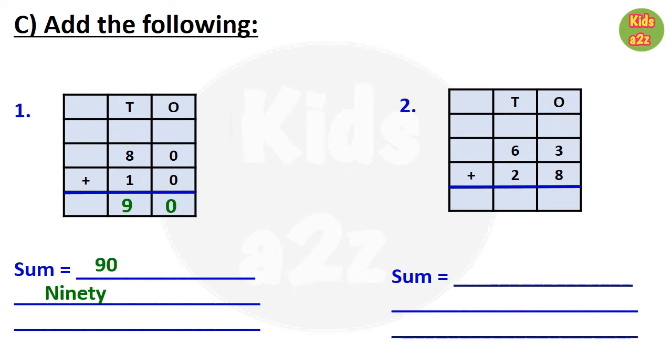For question number 2, first we need to add ones column, and we can see 3 plus 8 equals 11. That is 1 tenth plus 1 one. So they need to write 1 under ones column and need to carry 1 tenth to the tens column. So now they need to add 1 plus 6 plus 2, that is 9. So the answer is 91.